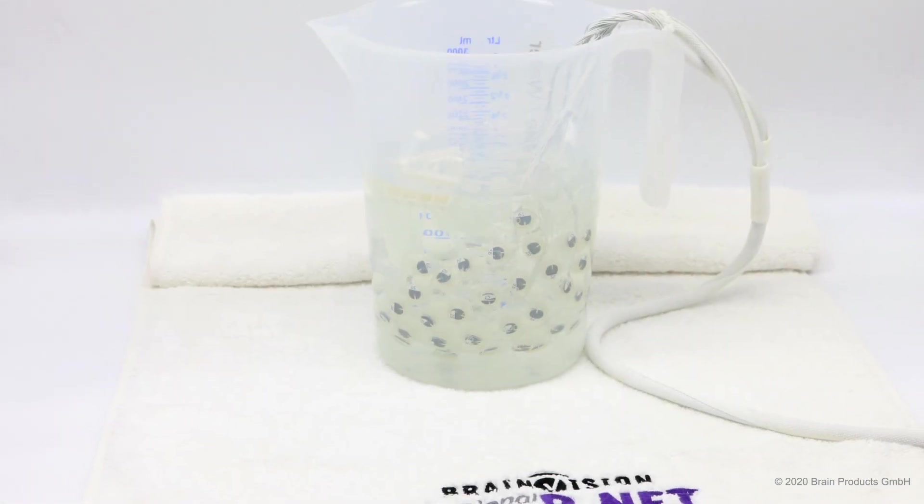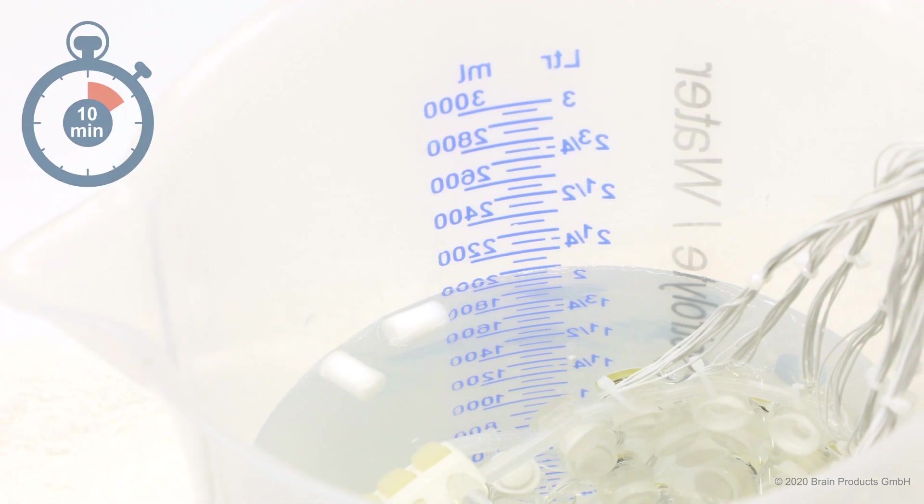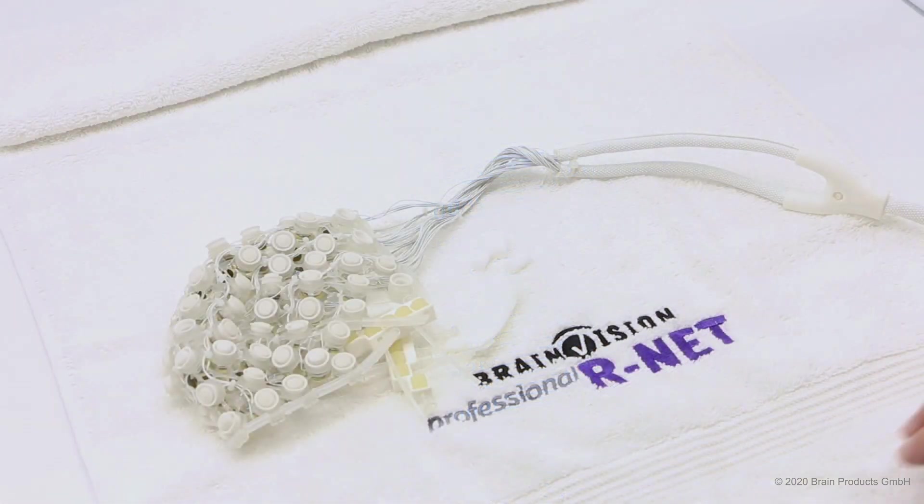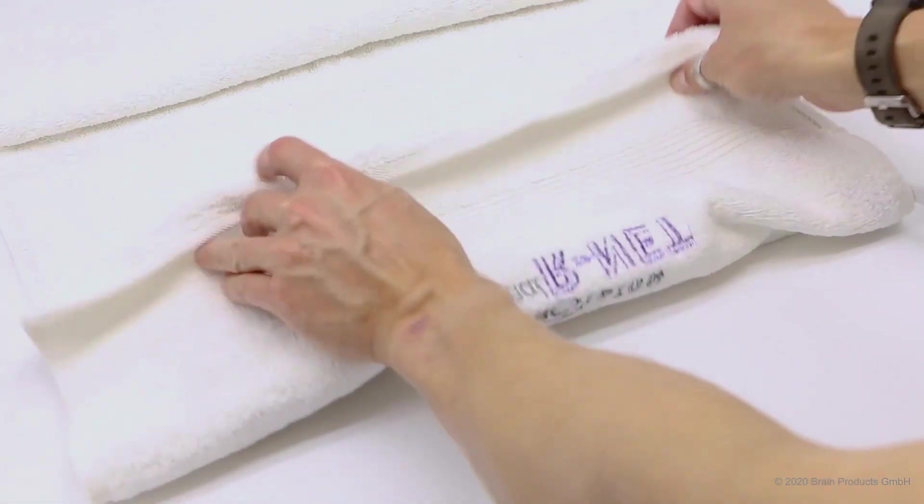Soak both the R-Net and replacement sponges in water for 10-15 minutes. Put the R-Net on a towel inside out and dry carefully.